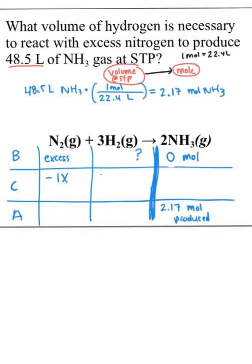Now let's do our change. We're going to do minus 1x, minus 3x, plus 2x. So now we have to find x. Here's the difference. We are not going to do the before divided by the coefficient. What we're going to do is we're going to use the column that we know the most about.